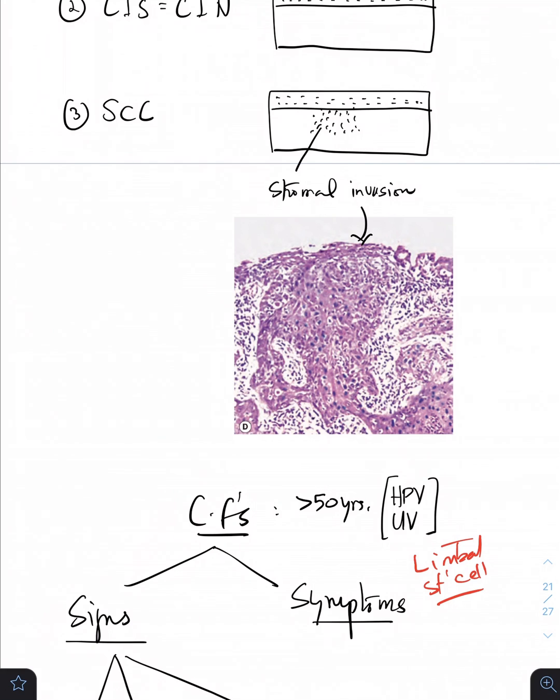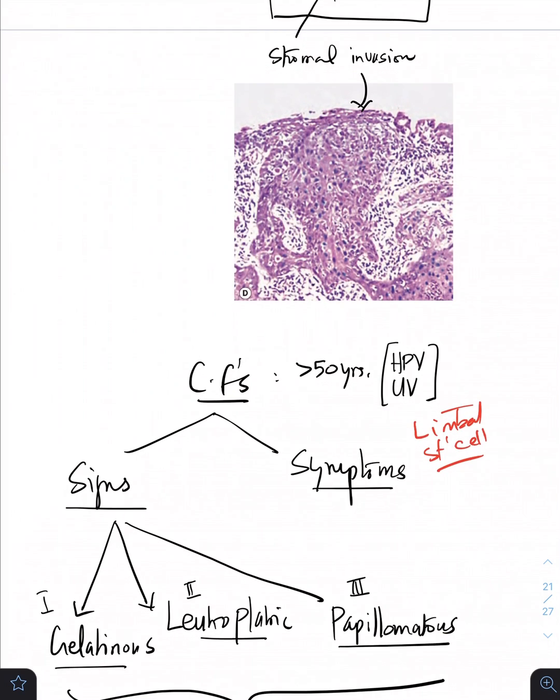As far as signs are concerned, there are three basic morphological forms of OSSN: one is going to be the gelatinous, leukoplakic, and papillomatous. What is gelatinous? It's like a soft gelatin, smooth surface. Leukoplakic means white. Papillomatous means which will appear like a papillae which we see in allergy conjunctivitis.